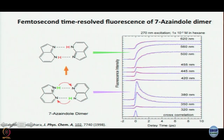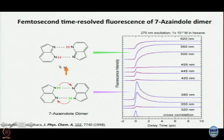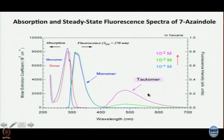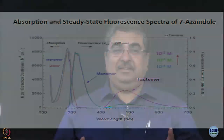We know that the non-proton-transfer species — the locally excited state — has emission in the 320 to 400 nanometer region. Beyond 400 nanometers it is predominantly the proton transfer species. There is another attractive feature: look at the spectrum — this locally excited state emission gets over by 400 nanometers, and that is where the proton transferred species spectrum begins. The good thing here is that there is almost no overlap, so the data are simpler.